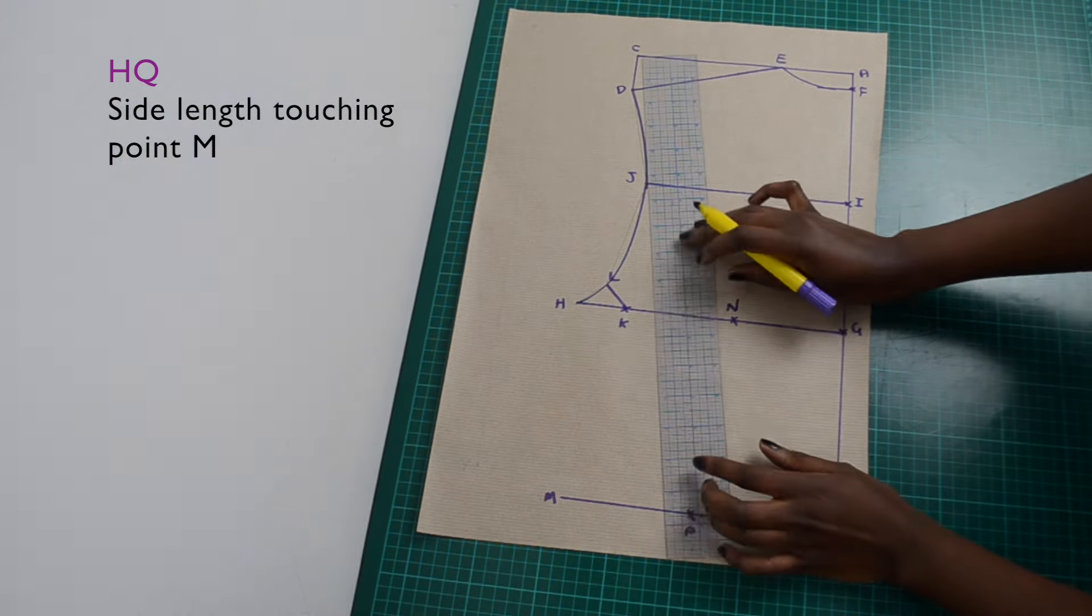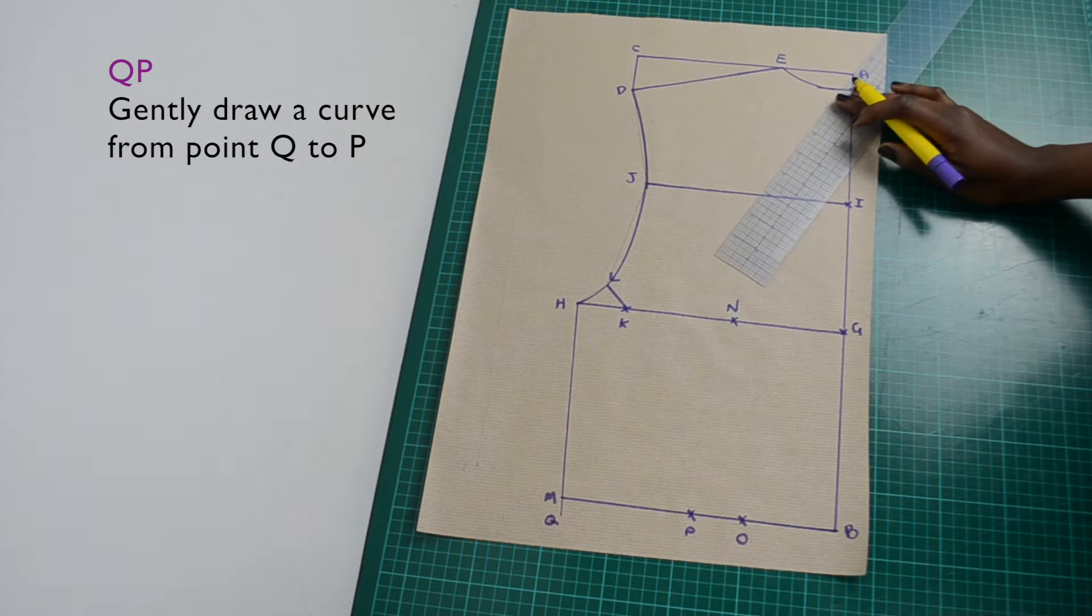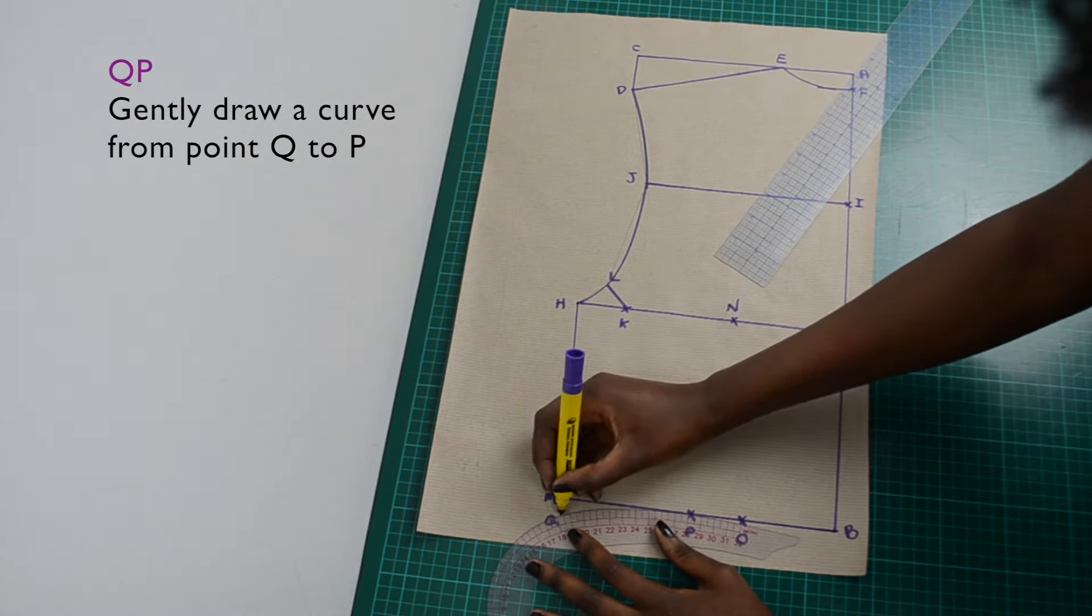Draw your side length from point H towards point M. If your side length extends past point M, gently curve it upwards.